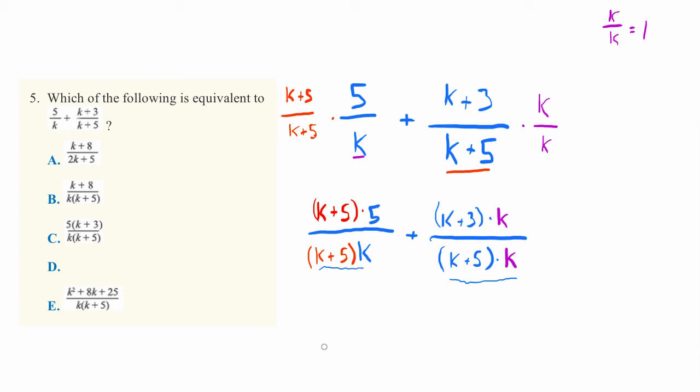If we do that addition, we have k plus 5 times k. That's the denominator for both sides. And then on the top, we merely have to add these together. And let's go ahead and run out some of the multiplications.